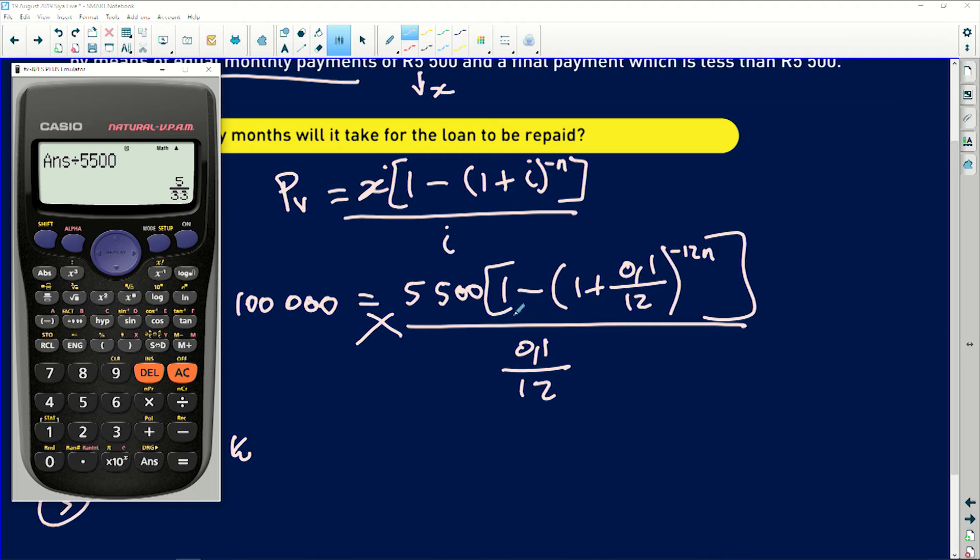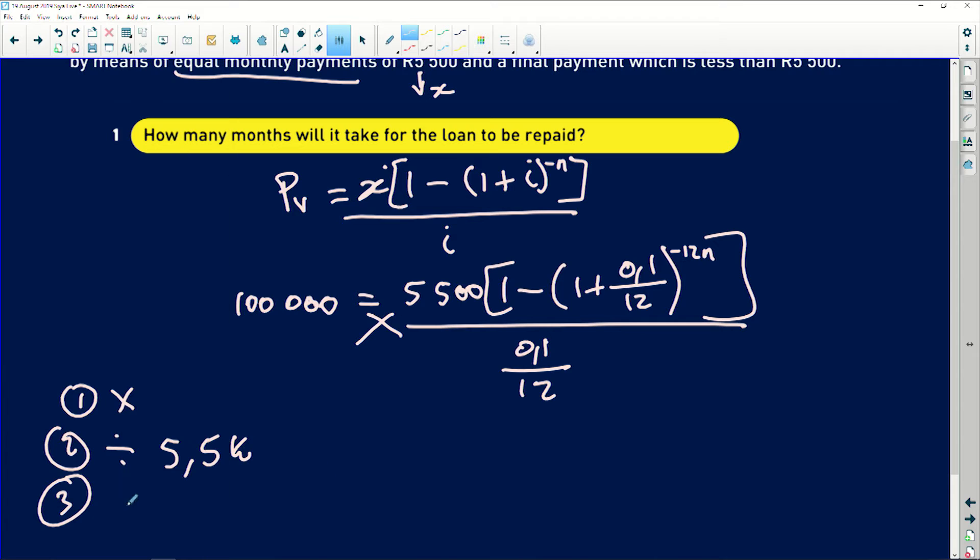And then now I need to get rid of that one there. So I minus a one, which is then equal to. So now this is what I'm going to have. So third step is minus one, both sides.